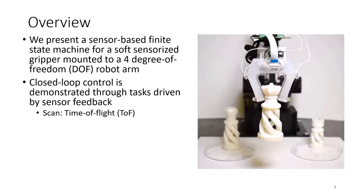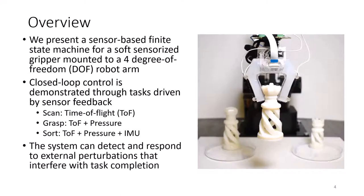For scanning, a time-of-flight sensor is used. For grasping, the time-of-flight sensor and two pressure sensors are used. For sorting, the time-of-flight sensor, pressure sensors, and an inertial measurement unit, or IMU, are used. The tasks of scanning, grasping, and sorting are well suited to finite state machine control because they can be distinctly divided into a relatively small number of states and directly governed by sensor data. With the sensor feedback, the system can also detect and respond to external perturbations that interfere with task completion.